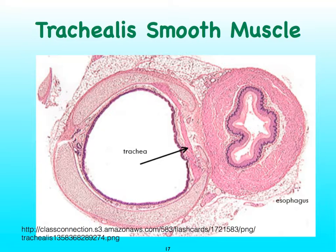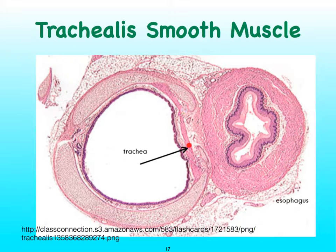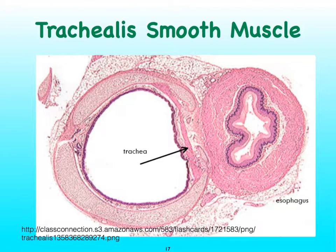The cartilage stops on the posterior aspect of our trachea, and that's where we find an important muscle called the trachealis, which is a smooth muscle. It helps the trachea constrict or dilate depending on the body's needs and reflexes. The absence of cartilage there and the presence of softer tissue also allows the esophagus to distend when it passes food. We're now ready to discuss the bronchial tree in the next video.